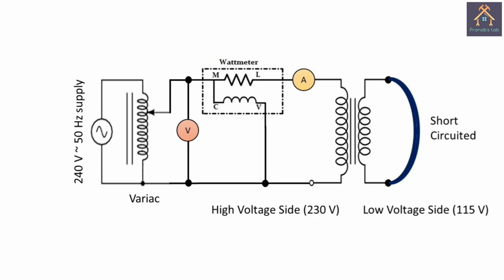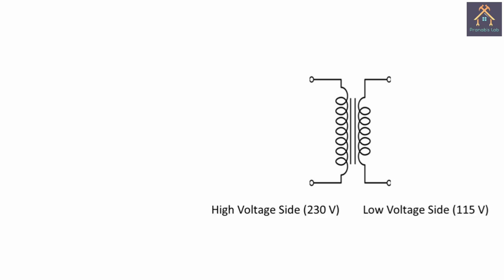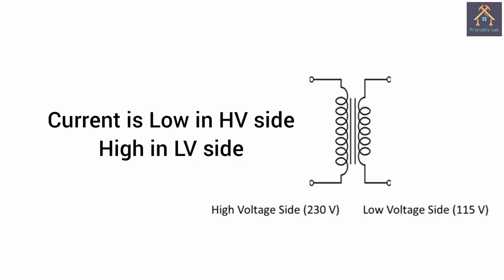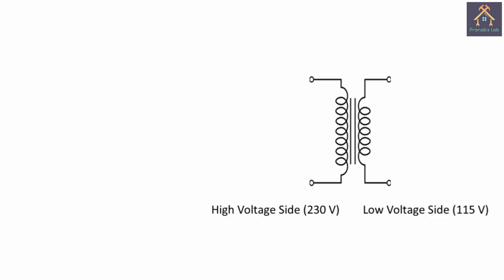Now let's connect it virtually. For this experiment, we need a 230 volt by 115 volt transformer. The high voltage side of the transformer will be connected with the measuring instruments and the low voltage side will be short circuited, because the rated current will be lower on the high voltage side compared to the rated current on the low voltage side. So the low voltage side should be shorted.